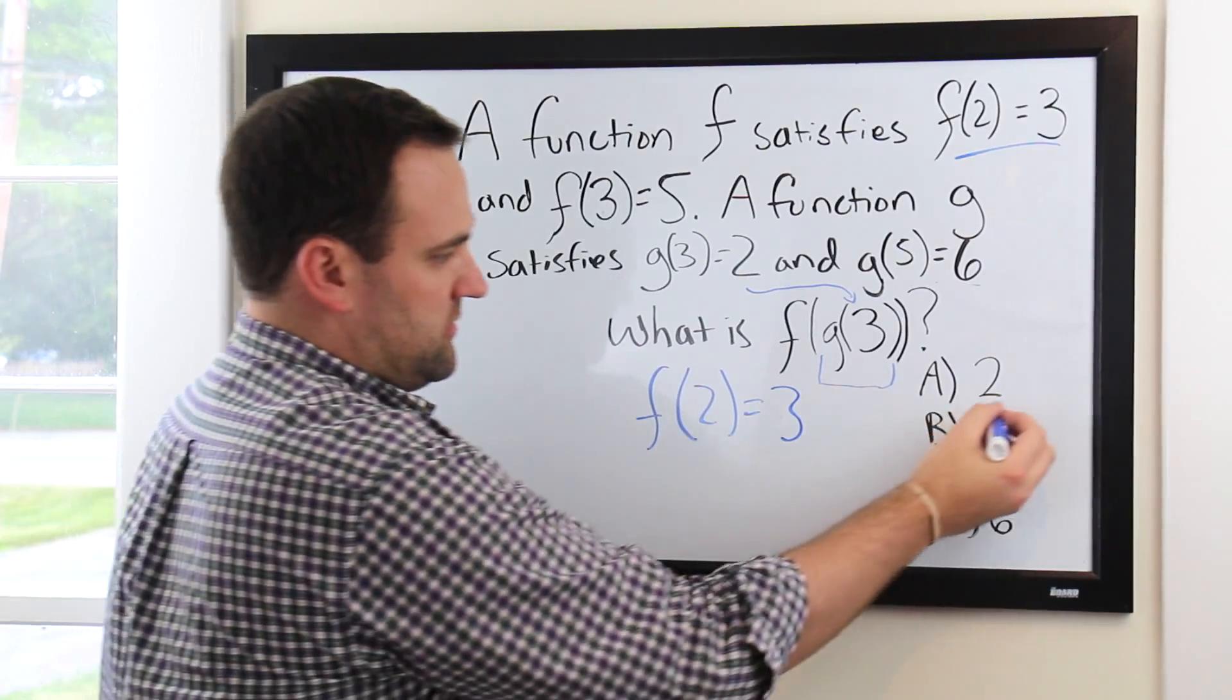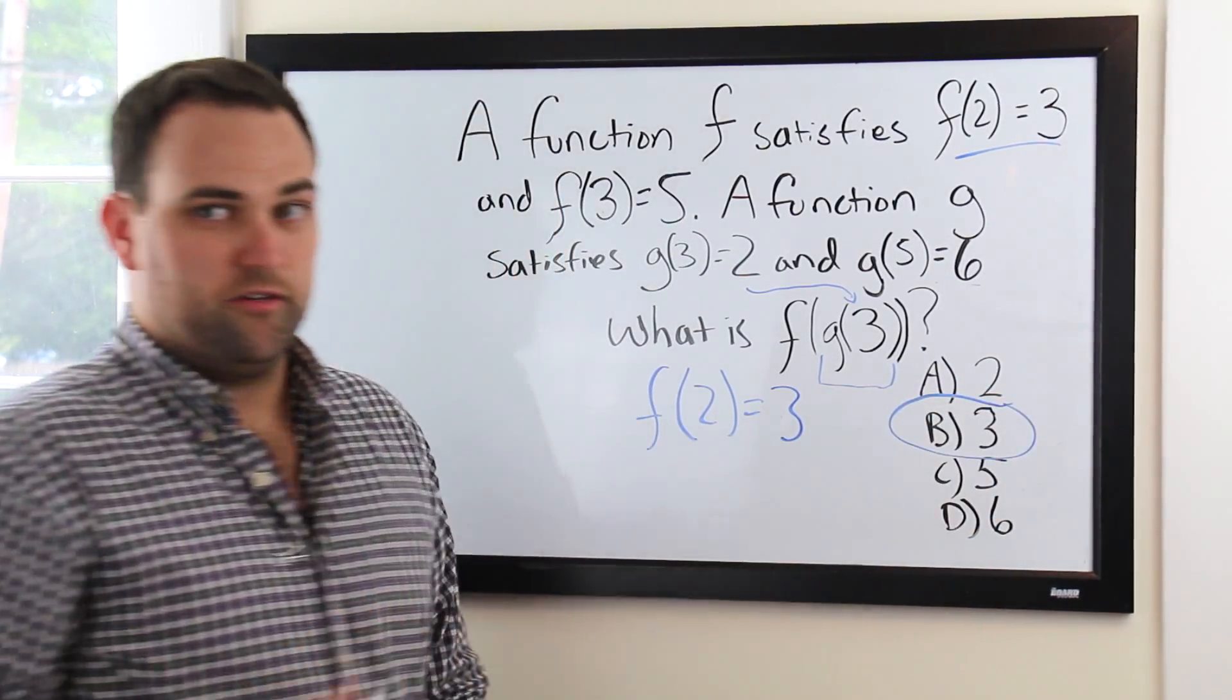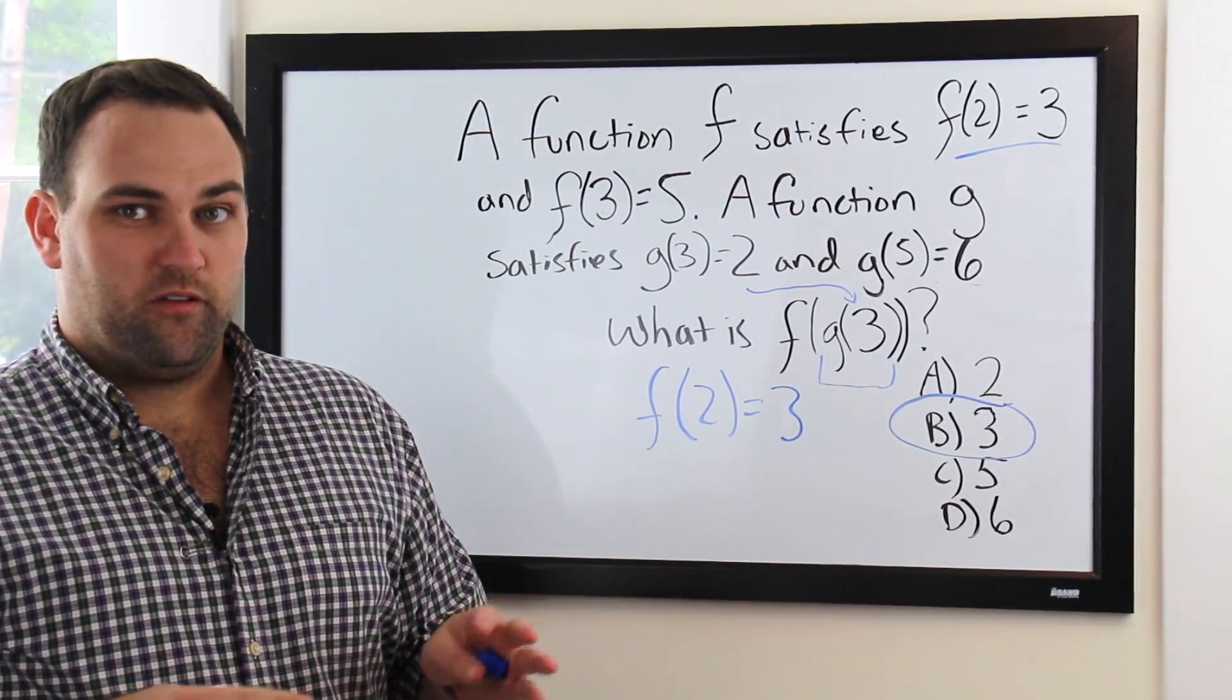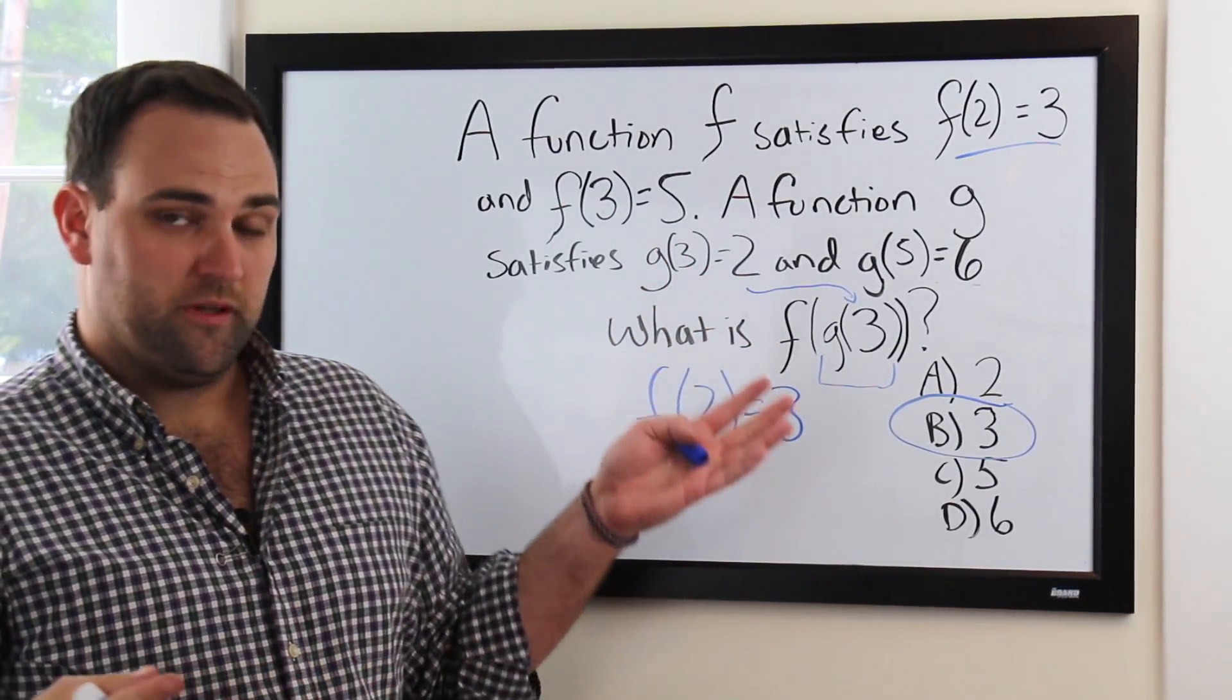So, if f(2) equals 3, you can circle 3 and you're done. So, just because you see all these letters, numbers, all that stuff, don't freak out. The problem is very simple as you can see, really no math involved.